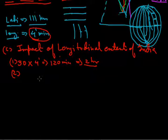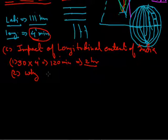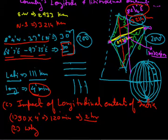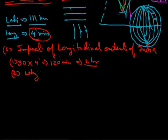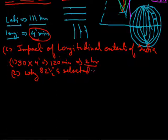A student raises a second question: why was 82 and a half degrees specifically selected as India's standard meridian? The teacher says it is a good question and explains there are two conditions required to select a country's standard time line.